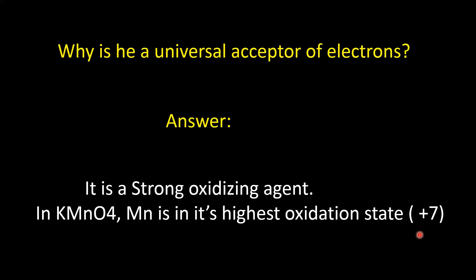Manganese can exist in variable oxidation states like plus 2, plus 3, plus 4, plus 6, and plus 7. Plus 7 is the highest oxidation state, and in potassium permanganate, manganese is present in the plus 7 state. So it is a strong oxidizing agent, which oxidizes other substances and itself accepts electrons, getting reduced to manganese of a lower oxidation state like manganese 2 or others.